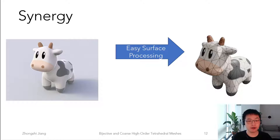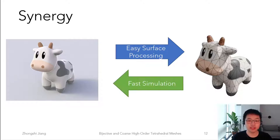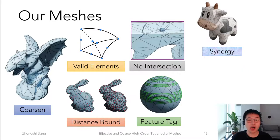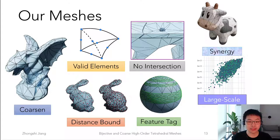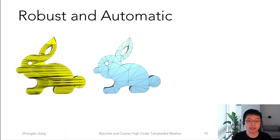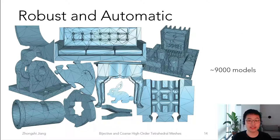This curved mesh, which is a volume mesh with few elements, is particularly good at fast simulation. The result of stress and displacement can be transferred back, resulting in a synergy across separate representations. Our algorithm is also resilient to low-quality input, allowing us to batch process large datasets of triangle meshes.